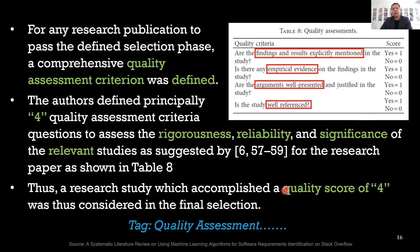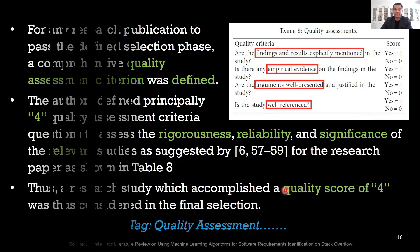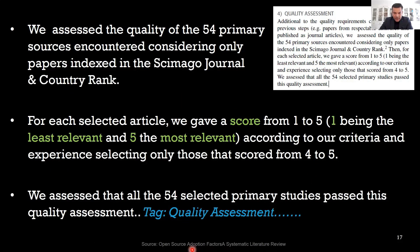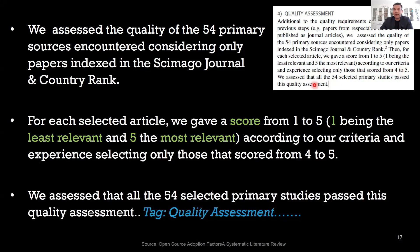Let's look at another example from a different paper: 'Open Source Adoption Factors: A Systematic Literature Review.' Here, for each article they gave a score from one to five — one being the least relevant and five being the most — according to their criteria and experience, selecting only those that scored between four and five. Additionally, they assessed quality of 54 primary sources, considering only papers indexed in the SCImago Journal and Country Rank.